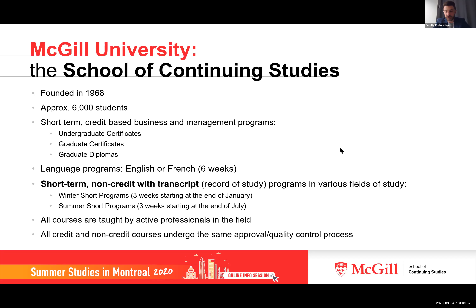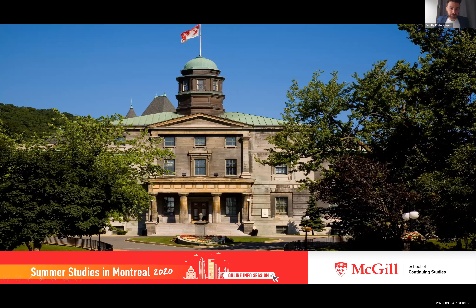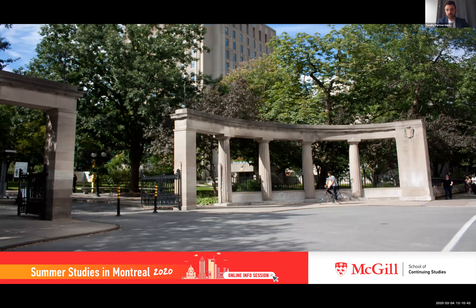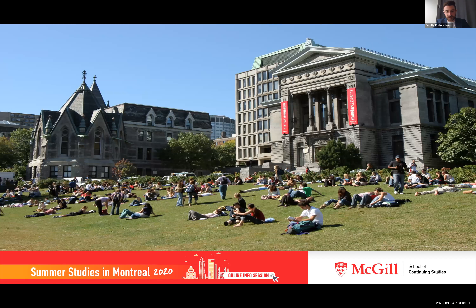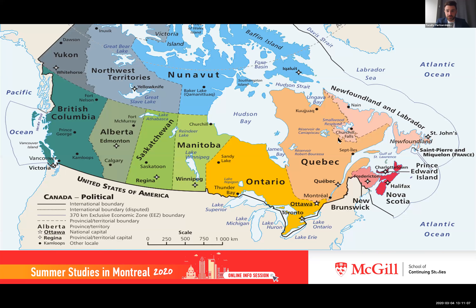Here's a look at McGill University. This is the main building now housing the Faculty of Arts. McGill has somewhat of an American campus style with large gates opening up to campus from street level. This is a view of the main campus area where students can relax and meet other students, especially during the summer time. There's a museum in the background and the library is just off to the left-hand side.